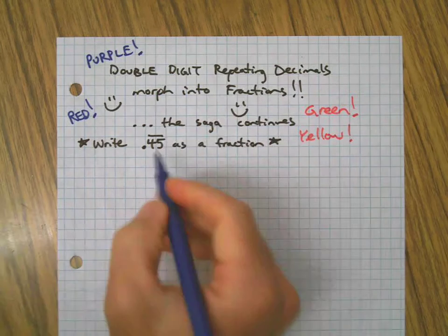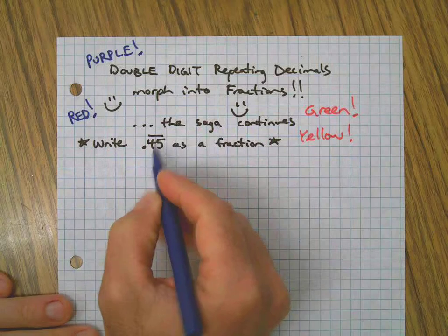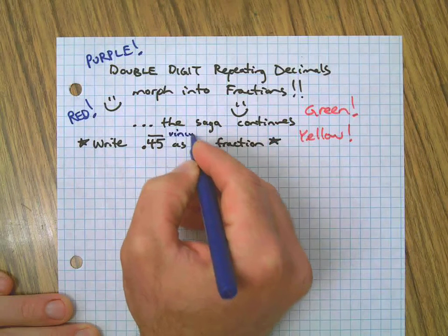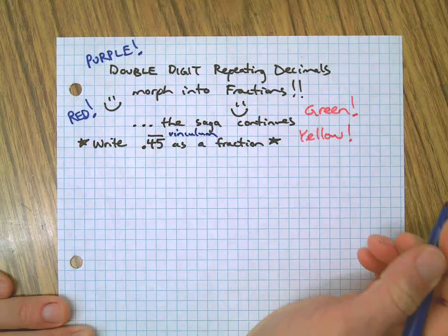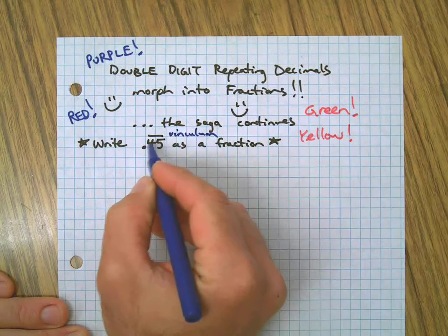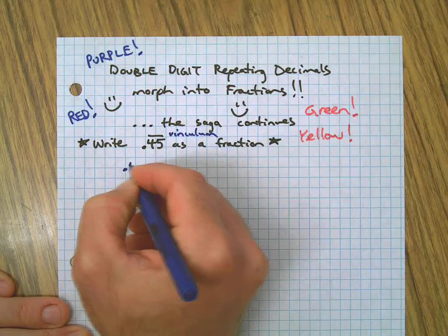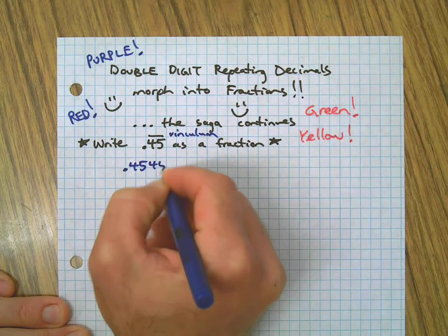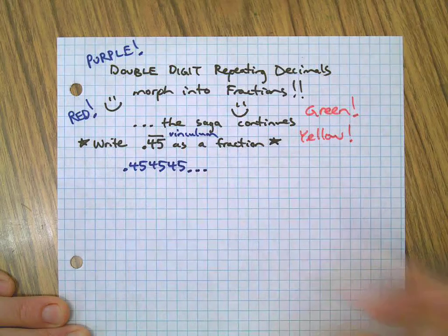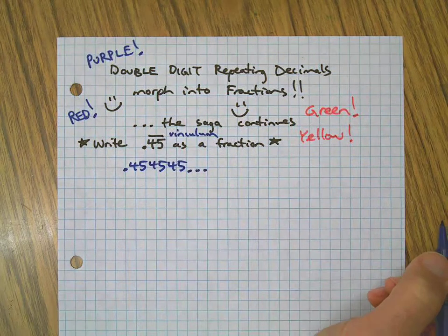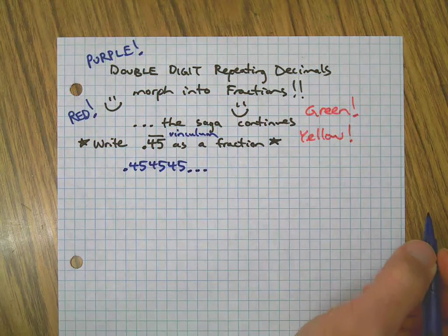First of all, here's a double digit repeating decimal. The vinculum is right there - it's my favorite word when it comes to these problems. The vinculum just tells you everything under it repeats infinitely. So the 45 with the vinculum simply means those 45 pairs are going to keep going forever.